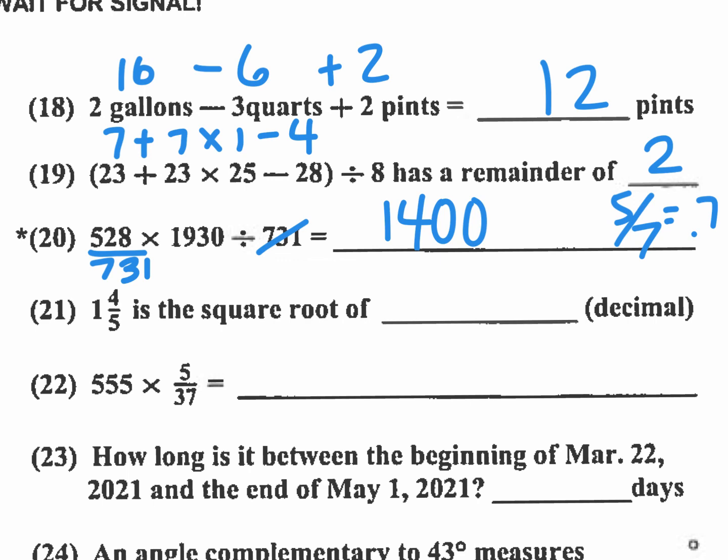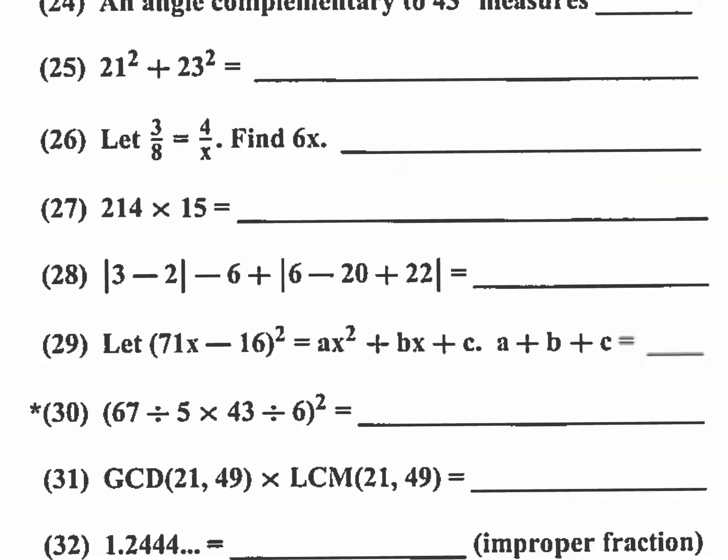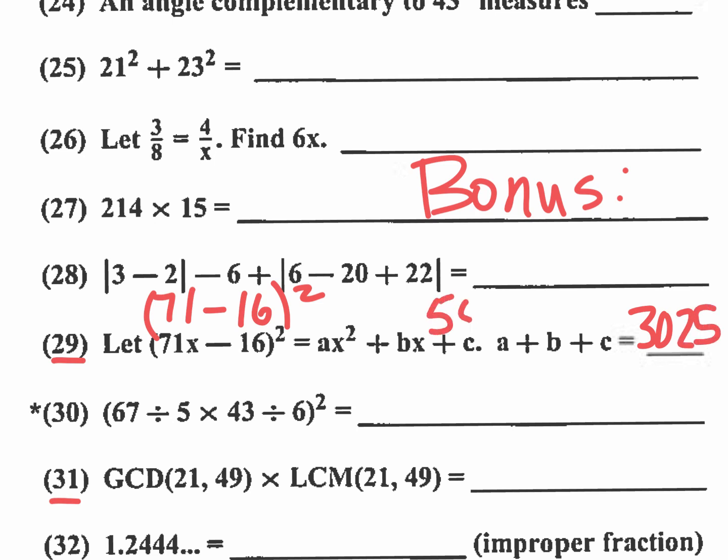Okay, let's look at some bonus problems now. Number 29. I'm going to do number 29 and 31 as a bonus problem. So we'll call this the bonus round here for hanging on for the end of the video. And so 71x minus 16 quantity squared is going to be ax squared plus bx plus c. That's a binomial expansion. And they're asking for the sum of the coefficients. So in this problem, what you're going to do is you're going to do 71 minus 16 and square that. And that will give you the sum of the coefficients without having to expand it. 71 minus 16 is 55. And 55 times 55 is going to be 3025. 55 times 55. And you know that 5 times 5 is 25. And then 5 times 6 is 30. And that's how you do that one.